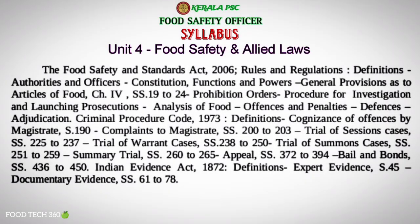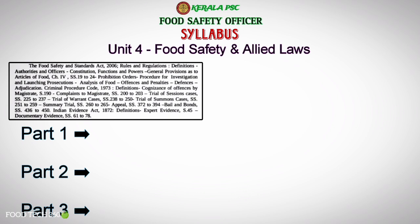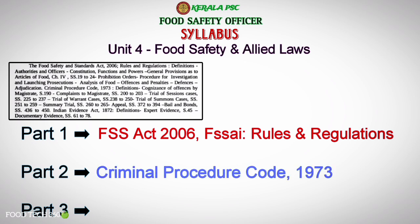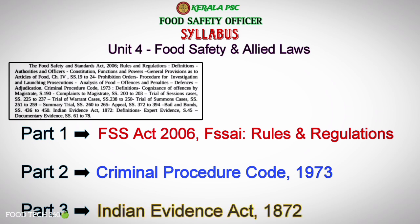Unit 4, Food Safety and Allied Laws, is divided into 3 parts. The first part covers the Food Safety and Standards Act 2006, FSA rules and regulations, and chapters under the FSA Act. The second part covers Criminal Procedure Code 1973 related topics. The third part covers Indian Evidence Act 1872 related topics.